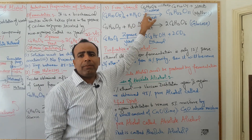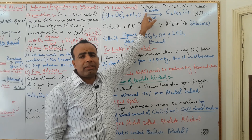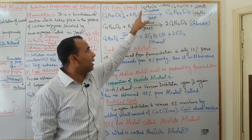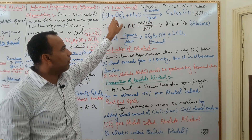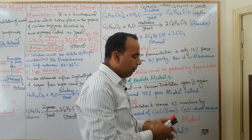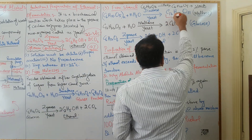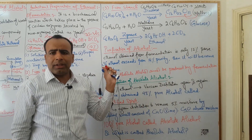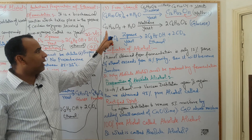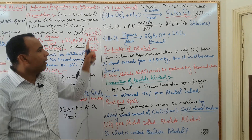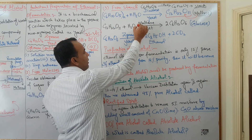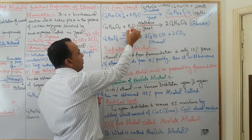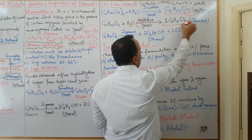In the presence of diastase enzyme obtained from yeast, this starch will be converted into maltose (C12H22O11). This is the first reaction. In the second reaction, in the presence of maltase enzyme, water is added and maltose is converted into glucose (C6H12O6).